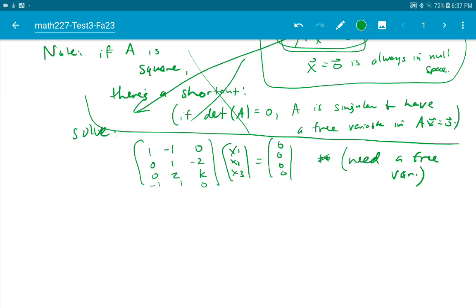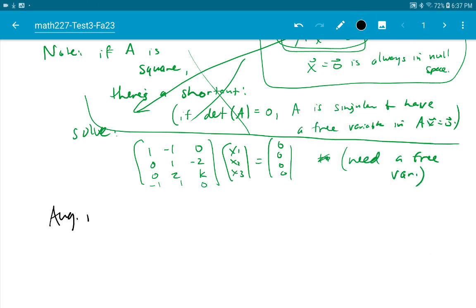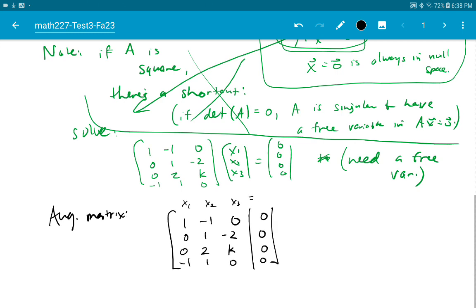Okay, we solve this the way we always solve it. Use an augmented matrix. You can always solve that. You don't need it to be square. All right, this will be the x1 column, the x2 column, the x3 column, the equal sign. All right, so we have to get this in row echelon form.